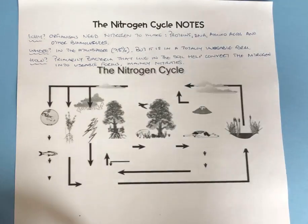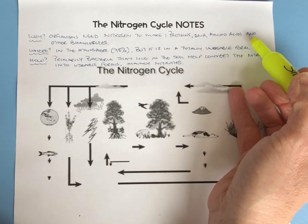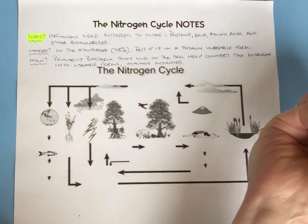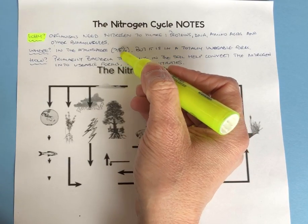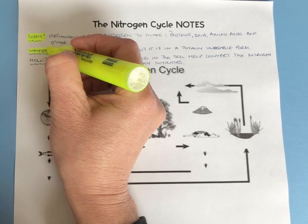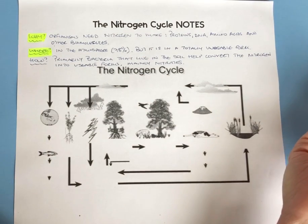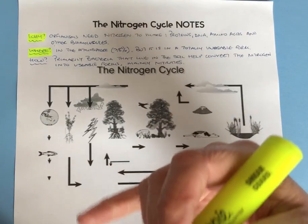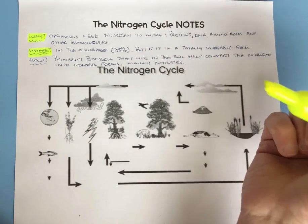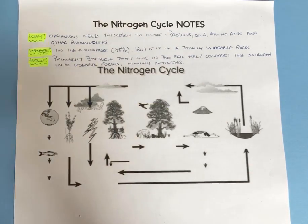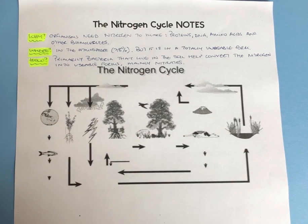To summarize: why do we need nitrogen? Because it's the building block of some major biomolecules — proteins, and everything is reliant on proteins. Where do we find it? In the atmosphere — 78% of our atmosphere is nitrogen, but it's unusable in that form. How do we convert it? We use primarily bacteria, and it can also be converted by lightning, though we can't rely on that. The main usable form is nitrates.